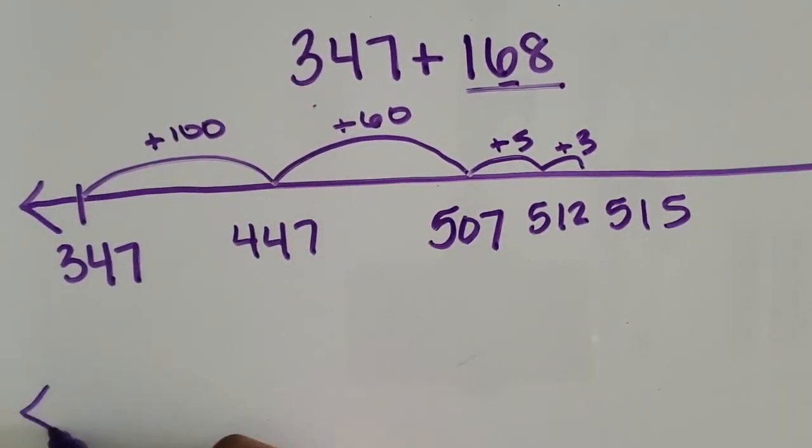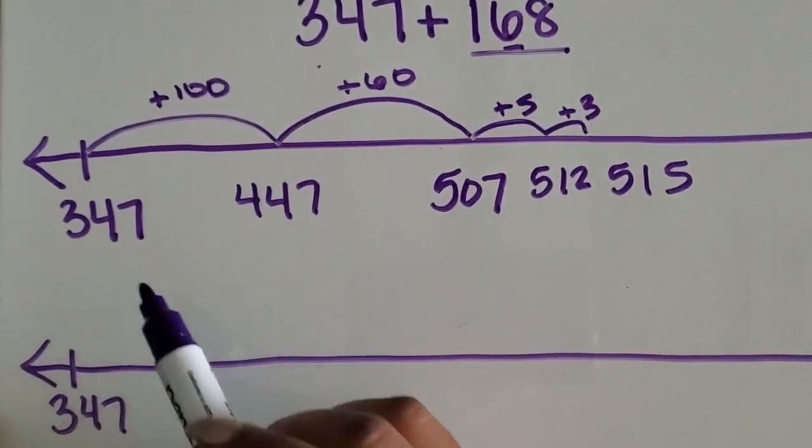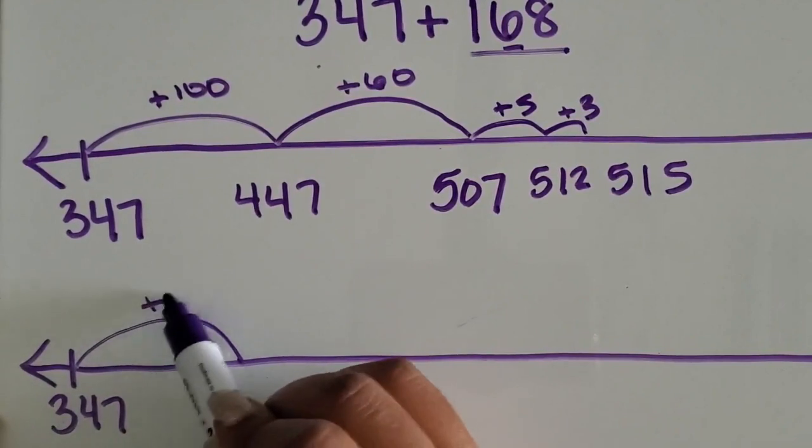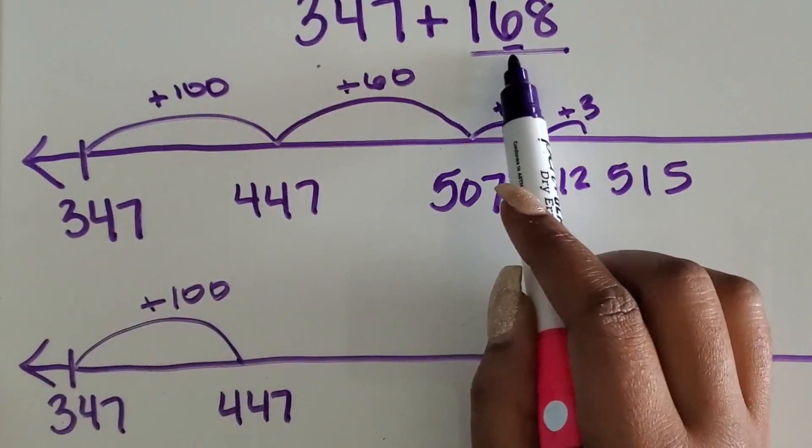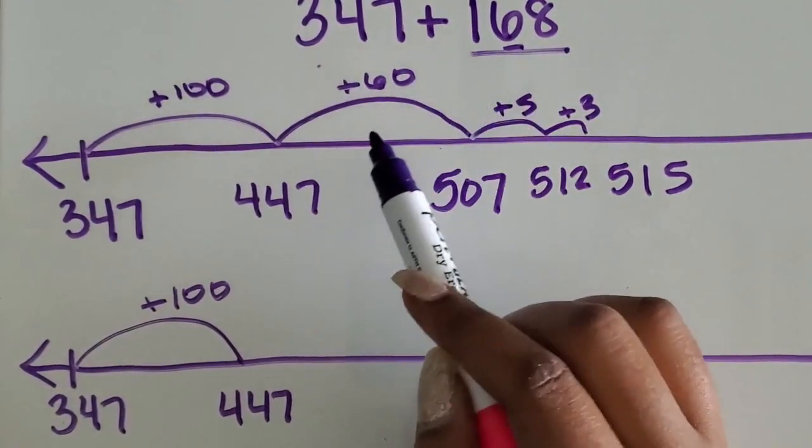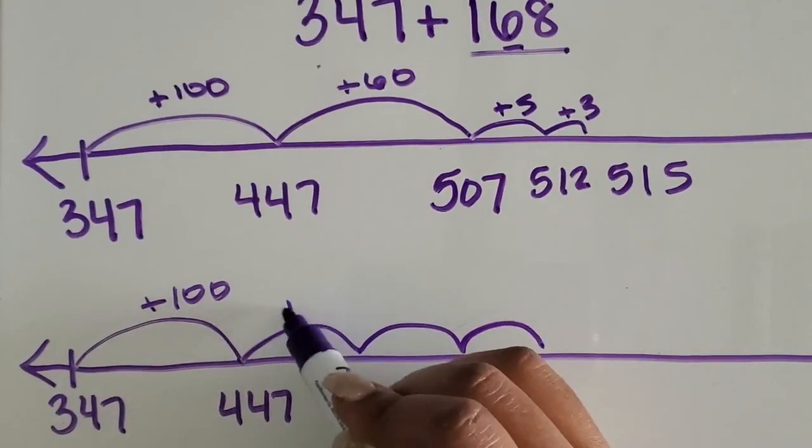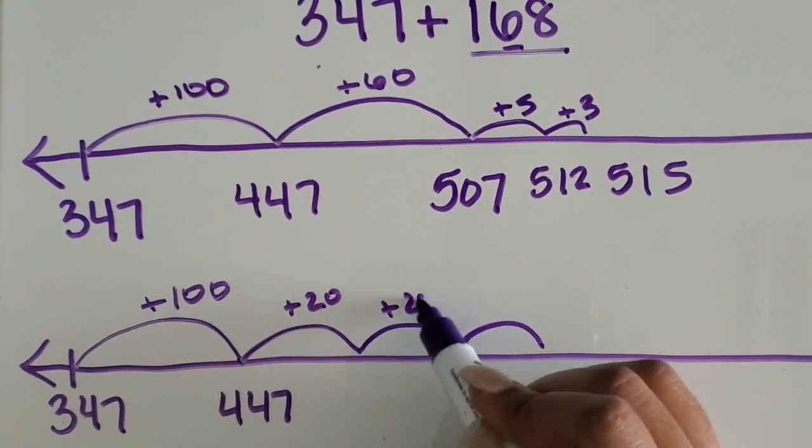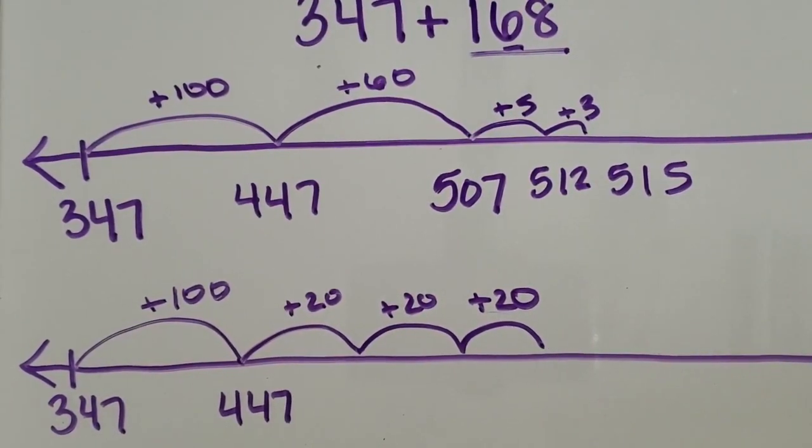Another way could be, again, to start with the larger number, 347, and then add on 100, which gives you 447. This time we could break up the 60 into three groups of 20, so 20, 20, 20. It depends on what's easier for the student.